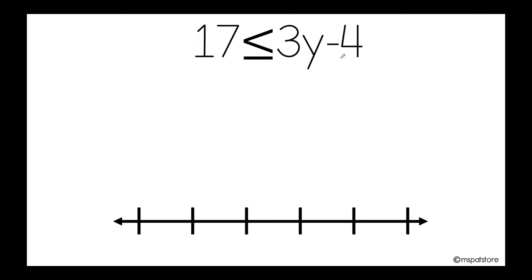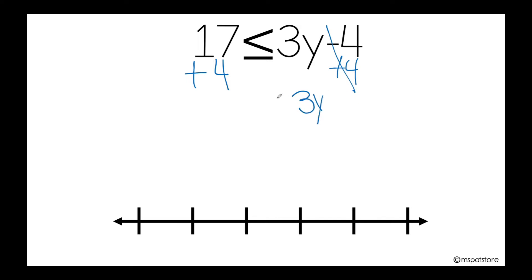So I'm going to add 4 here and also add 4 on the other side. I'm ready to cancel this out, and it will be positive 3y is greater than or equal to 17 plus 4, which is 21.